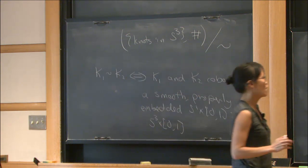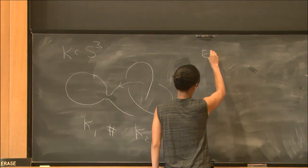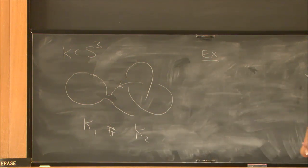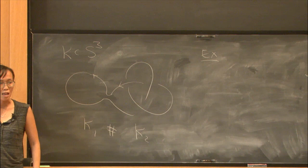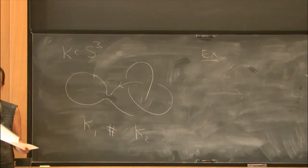So let me give you an example of what such a concordance can look like. How am I going to show you an example happening in four dimensions? Well, you can think of the I direction as time. So at each time we see a slice that's a copy of S³, and that's something we can see.